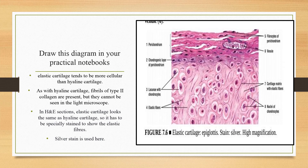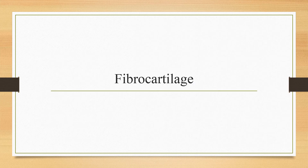The stain used here is silver staining, which makes the elastic fibers more prominent. You need to draw the chondrocytes located in lacunae and arranged in groups, a layer of perichondrium, and the delicate elastic fibers in the matrix. These three points should be drawn clearly to label the slide as elastic cartilage in your histology practical notebooks.